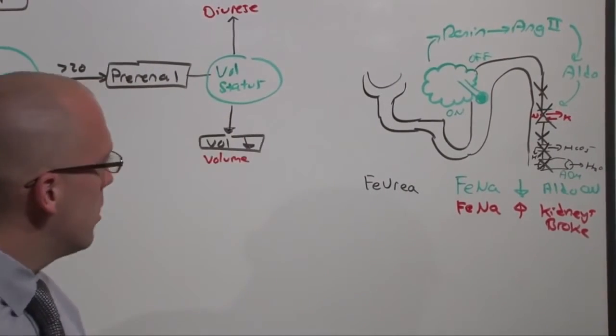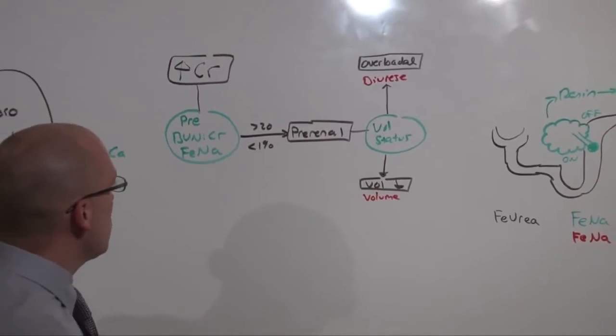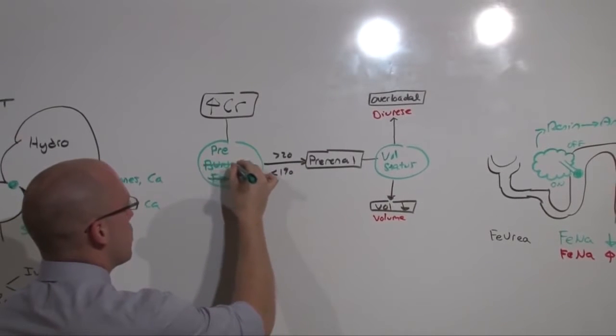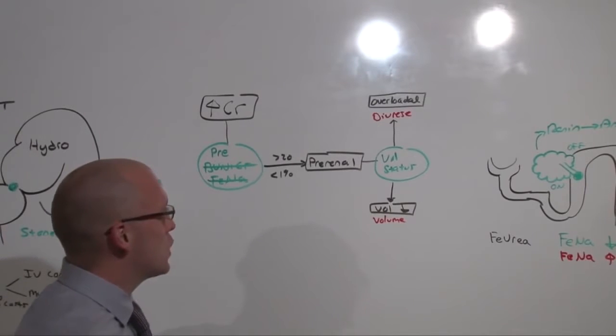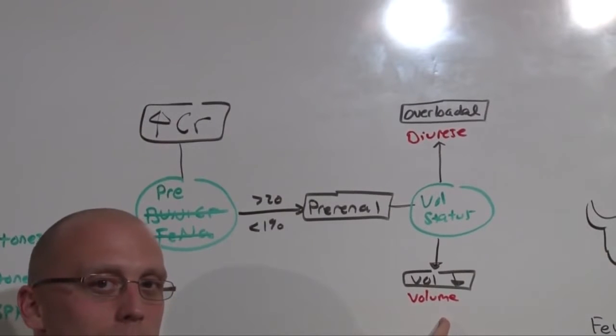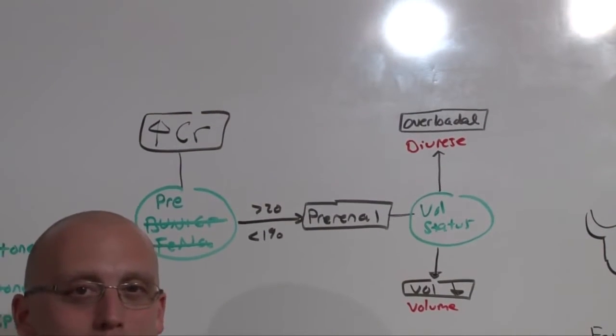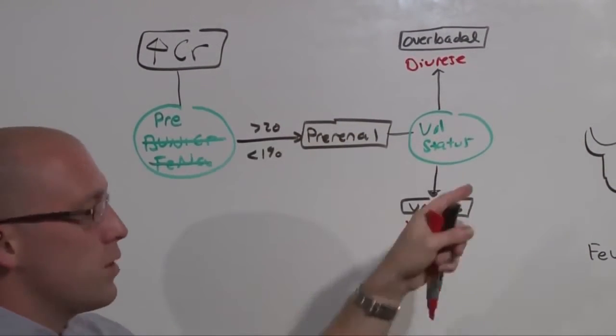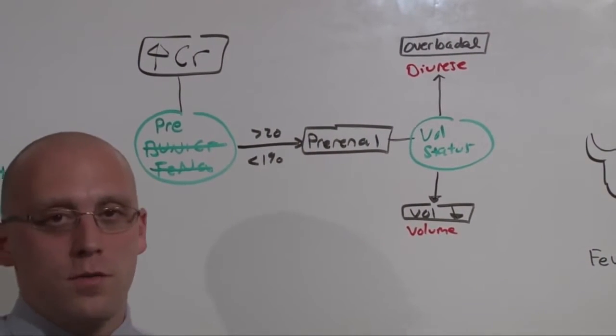So, we come back to our diagram, the one that everyone knows. FENA only useful in very rare instances of oliguria, and BUN to creatinine ratio not that useful. Instead, what you can do is say, this person's volume down. I'm just going to give him some fluids and recheck a BMP. Well, this person looks volume overloaded. I'm going to diurese him and recheck a BMP. And, if that's what you do based on your clinical reasoning rather than the following of an algorithm, you're going to perform better than if you just get a bunch of studies and try to figure them out that way.